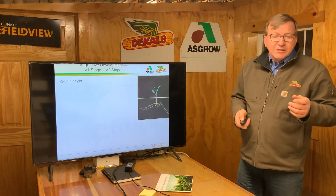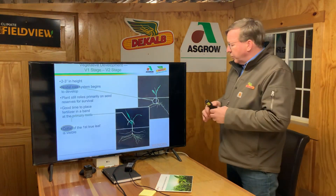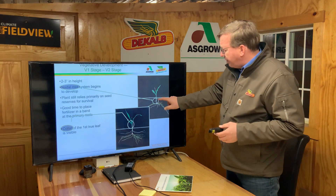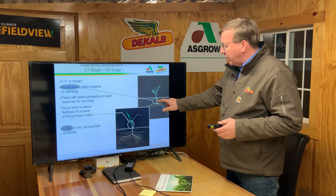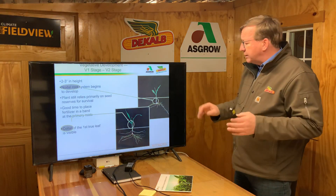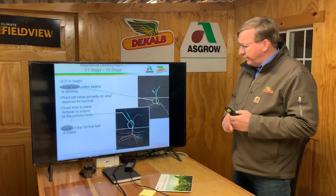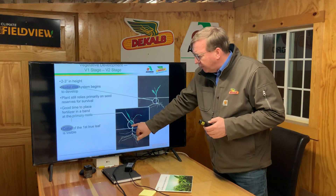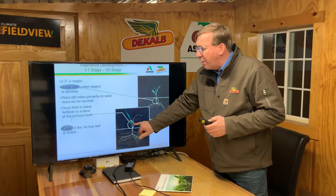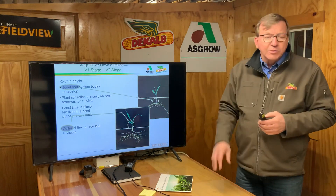A little bit later in life than those nodal roots developing right here — we've got our base roots, the radicle and seminal roots, and then as this plant gets a little bit taller, kind of in that V1 stage, it's going to really start to develop nodal roots right here. Then the next step is you're going to be able to see the collar. So right here will be a collar. This plant has got one collar, so we'll call it V1.